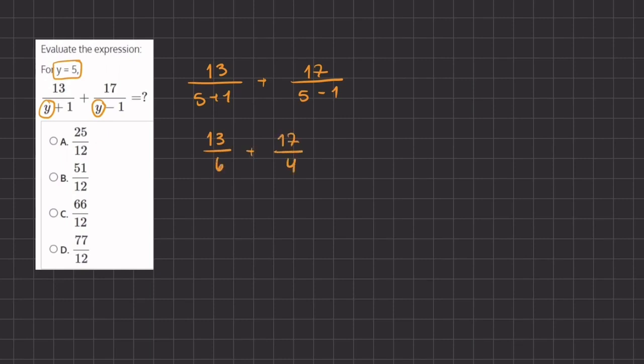In order to add these two fractions together, we need to have a common denominator. The least common denominator between 6 and 4 is 12.